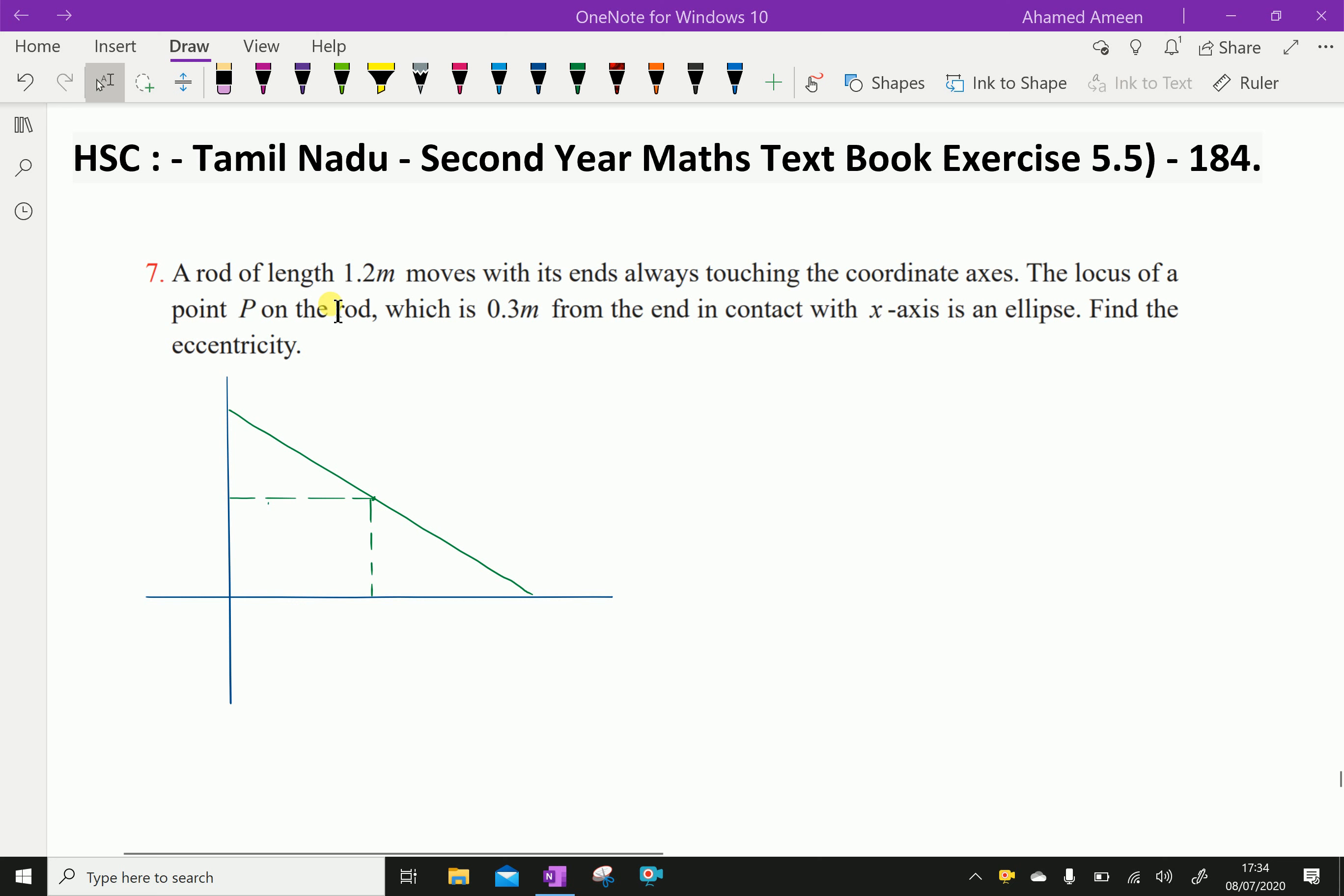A rod of length 1.2 meter moves with its ends always touching the coordinate axes. The locus of a point P on the rod, which is 0.3 meter from the end in contact with x-axis is an ellipse. Find the eccentricity.